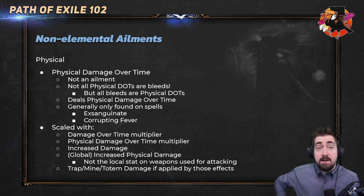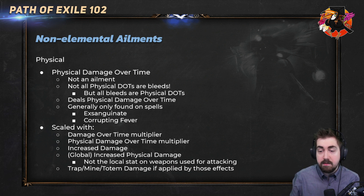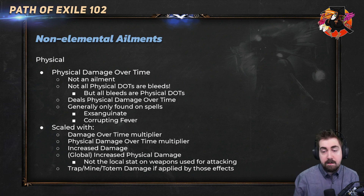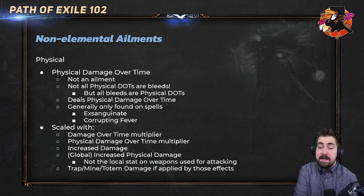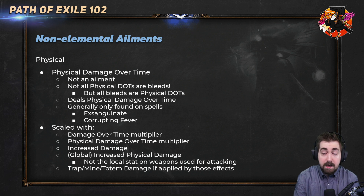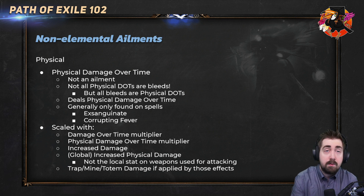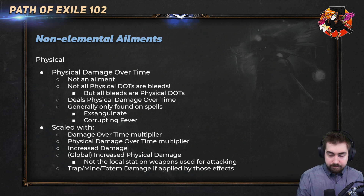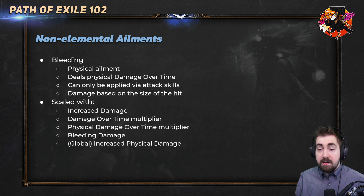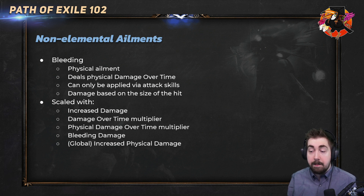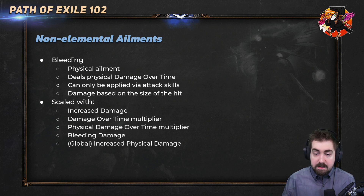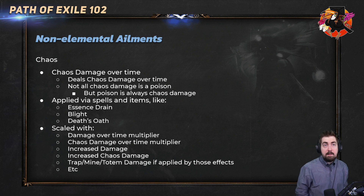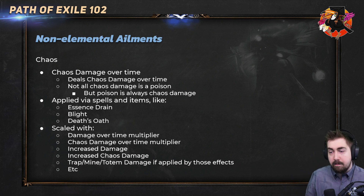Non-elemental ailments: physical damage over time is not itself an ailment — not all physical damage over time is bleed. All bleeds are physical damage over time, but not all physical damage over time is bleed. Physical damage over time is generally found on spells like Exsanguinate and Corrupting Fever, and is scaled with damage over time multiplier, which is global to every damage over time. There are also specific ones like physical damage over time multiplier, cold damage over time multiplier for cold. Increased physical damage that is global also scales it, as does trap, mine, and totem damage if applied by those. Bleed is a physical ailment dealing physical damage over time — it can only be applied via attack skills, and damage is based on the size of the hit. It scales with increased damage, dot multiplier, physical dot multiplier, bleeding damage, and increased physical damage.